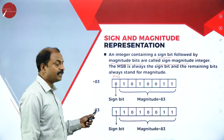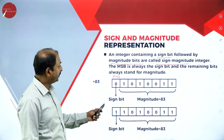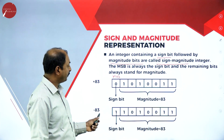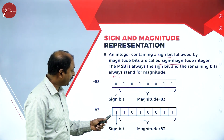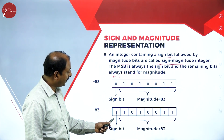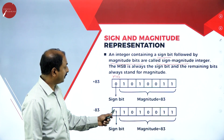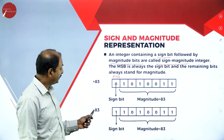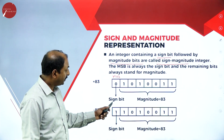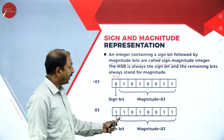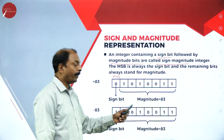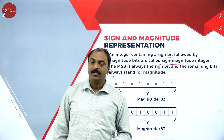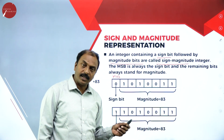Now look at another example: minus 83. This is the same 83, converting the decimal into binary values. After that, the MSB is represented with 1 — a 1 in the MSB indicates it is a negative integer. So this MSB is the sign bit and the rest are magnitude bits. This is the sign and magnitude method for representing negative integers.